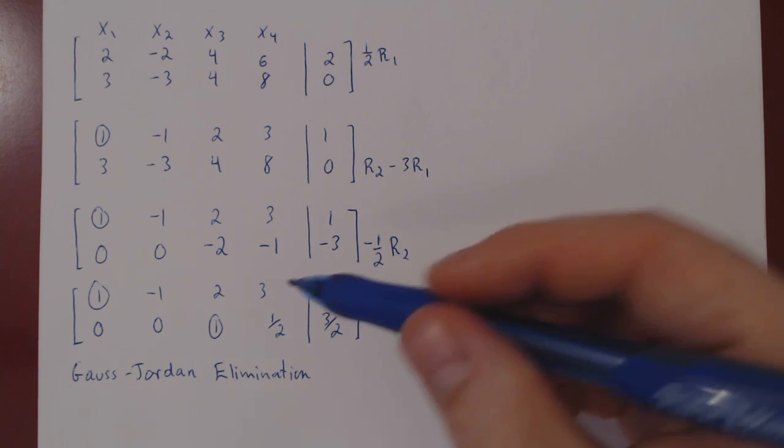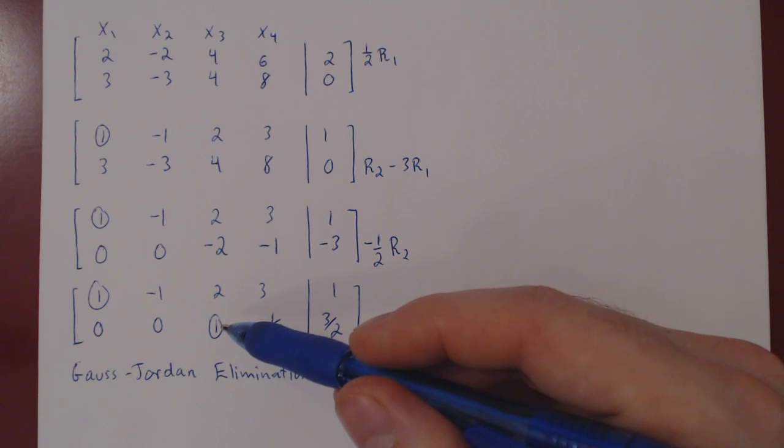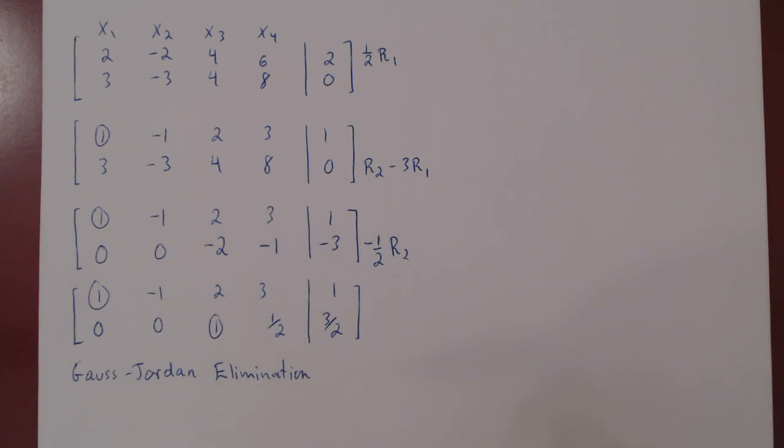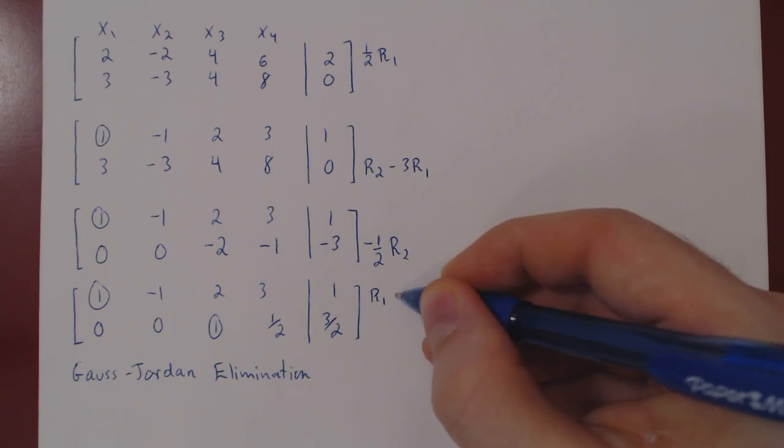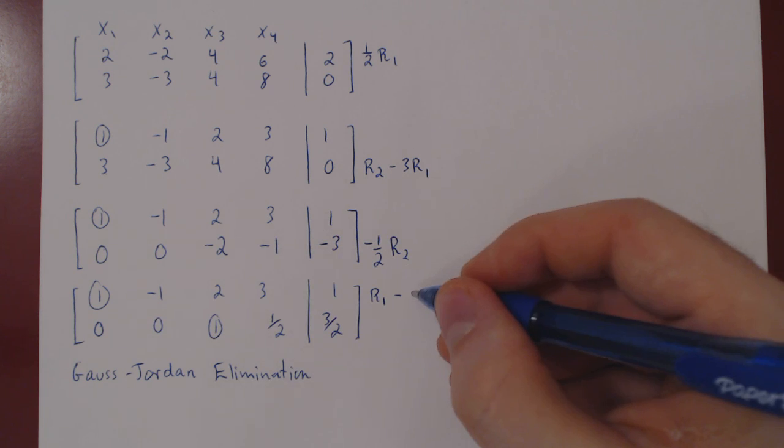And the idea, as always, is to introduce, from the last leading one, zeros above of every leading one. So to kill off this 2, we will simply do row 1 minus 2 row 2.